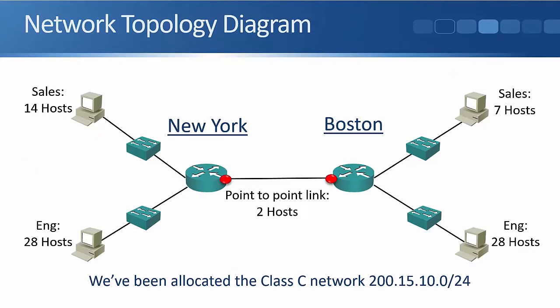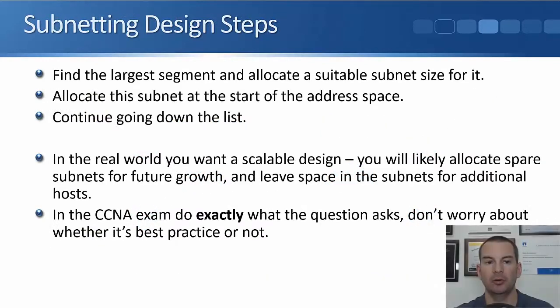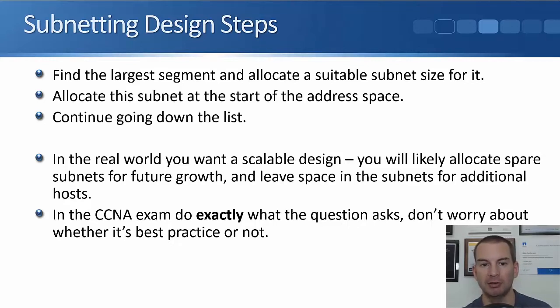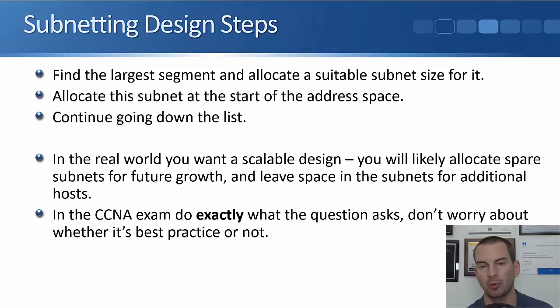Another thing we need to do is not forget about our point-to-point links between the routers. They need IP addresses too. It's a point-to-point link so we've just got two host IP addresses there. The outside interface on the New York router is connected to the outside interface on the Boston router. Now, the steps you work through: first find the largest segment and allocate a suitable subnet size for it. Create that subnet at the start of your available address space, then keep working your way down from largest to smallest until you've allocated addresses for all of your different subnets.